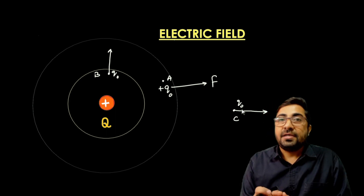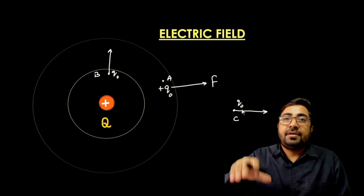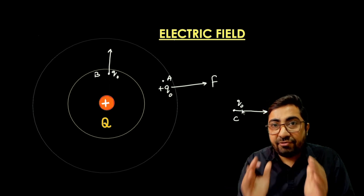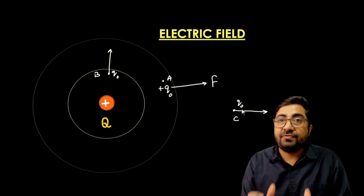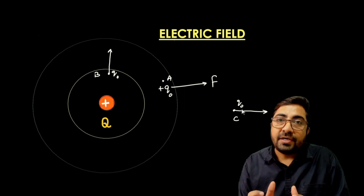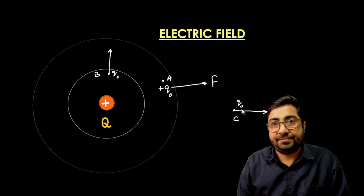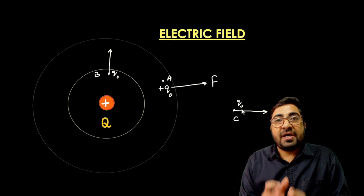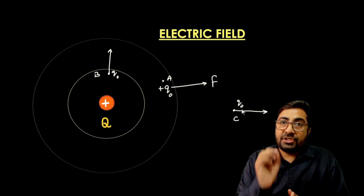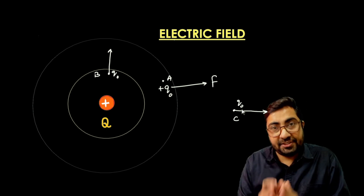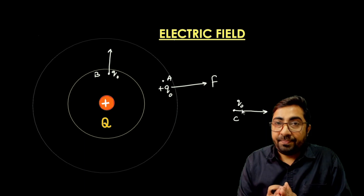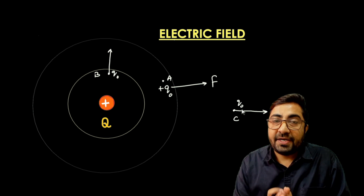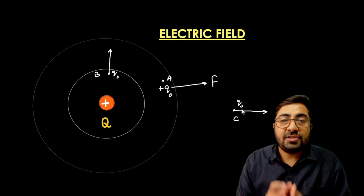It means we can say there is a region where Q applies force. This region or space of Q is called the electric field of this charge. Since we are observing the effect on Q0, this Q0 acts as a test charge. And since we are checking the effect of Q, Q acts as a source charge.